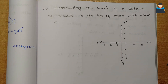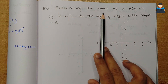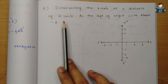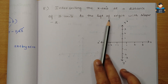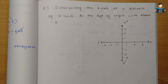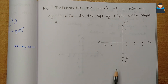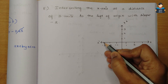Hello everyone, welcome to our channel. In this video, we cover 11th standard NCERT Maths Chapter 10 Straight Lines, Exercise 10.2, 5th sum. The 5th sum: a line intersects the x-axis at a distance of 3 units to the left of the origin, with slope minus 2.